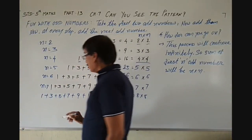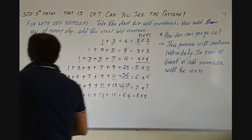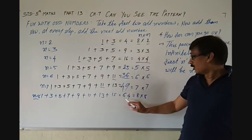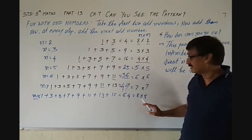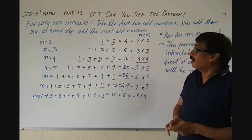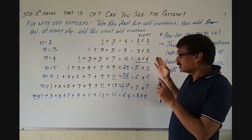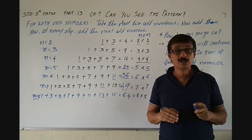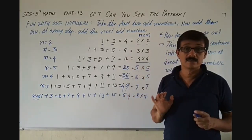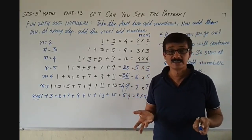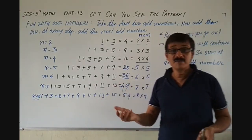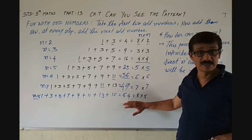And here N is equal to 8, so the sum is 8 multiplied by 8, that is 64. So with this we can say we can go this way infinitely, because we know there are infinite numbers, and therefore odd numbers are also infinite. If we go like this, we can find out the sum of the odd numbers.